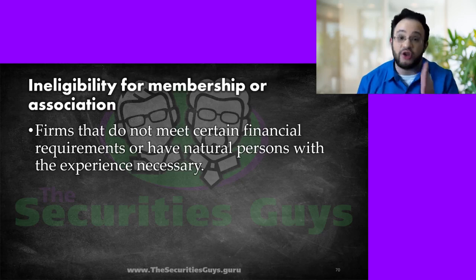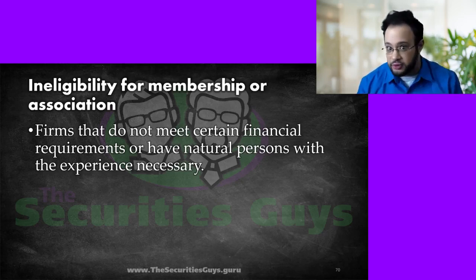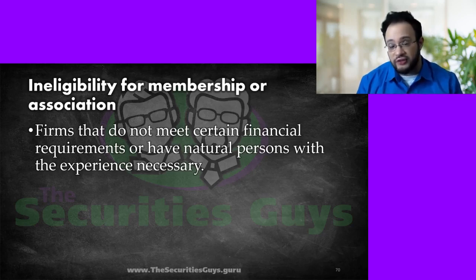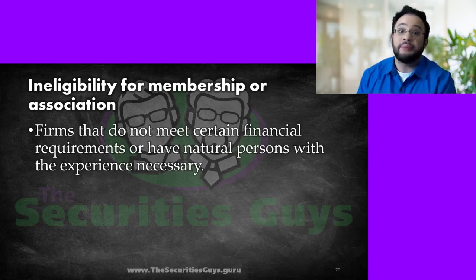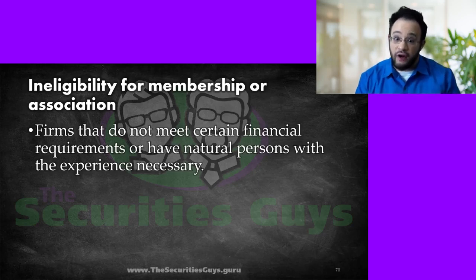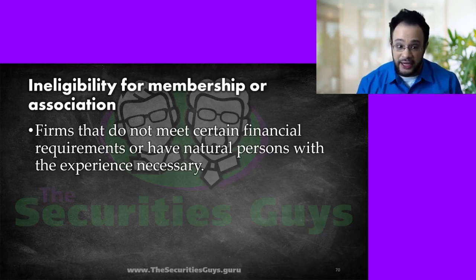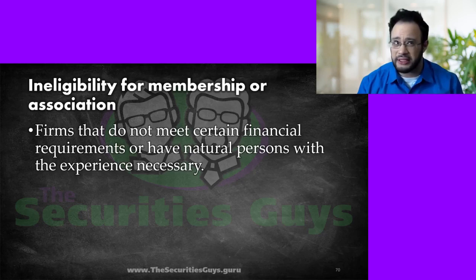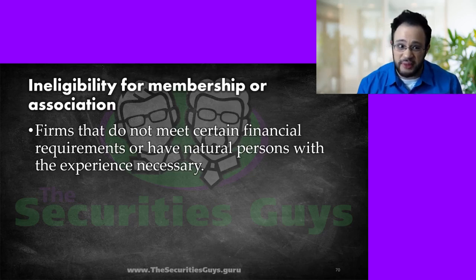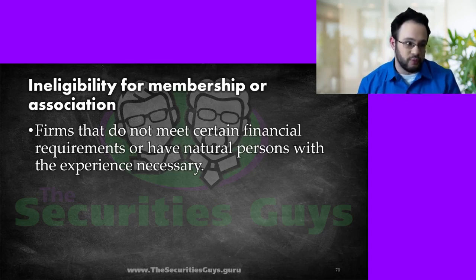People don't have those requirements. There was a movie called The Pursuit of Happiness with Will Smith — based on a true story — about someone starting out in the financial industry. It shows him studying while living in a public bathroom, because that's where he and his son were living; they didn't have a house while he was studying to get into this business. So clearly the financial requirements are not for natural persons.